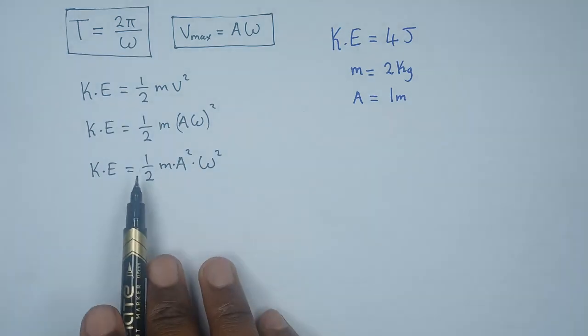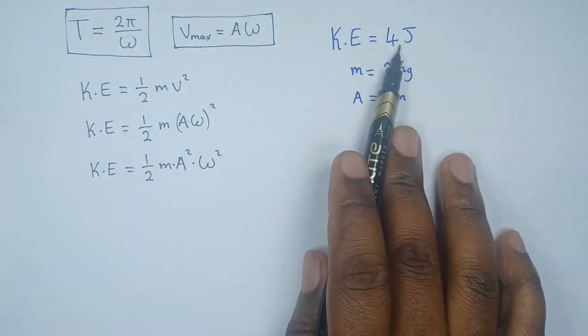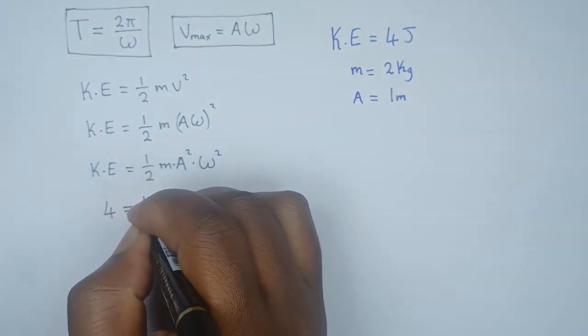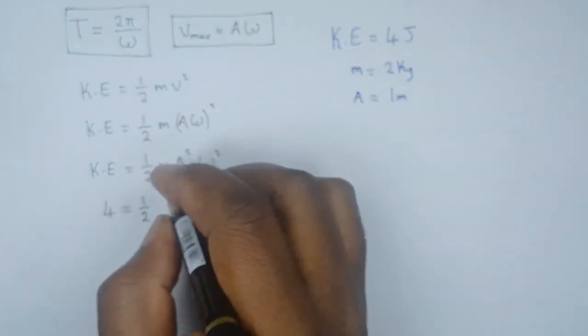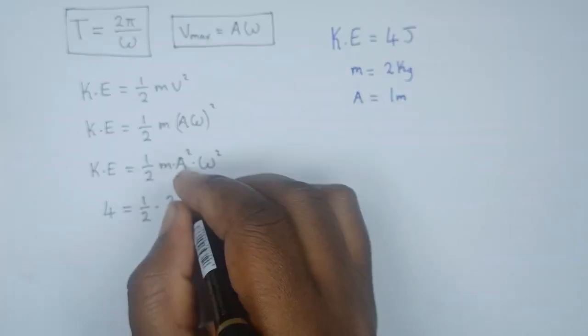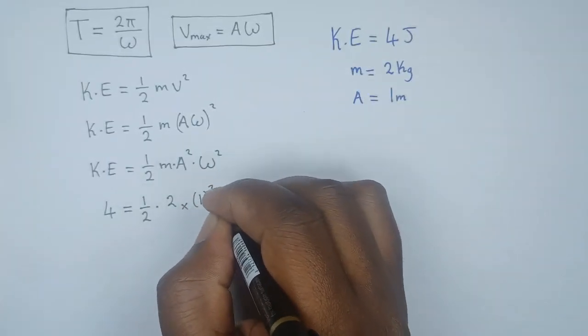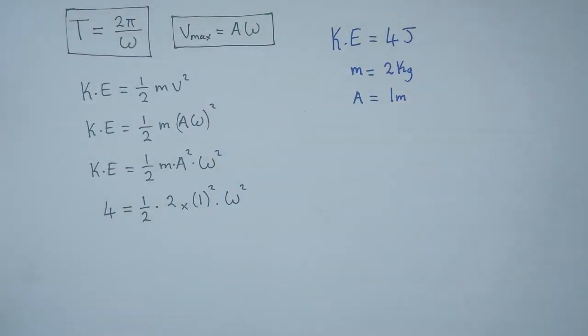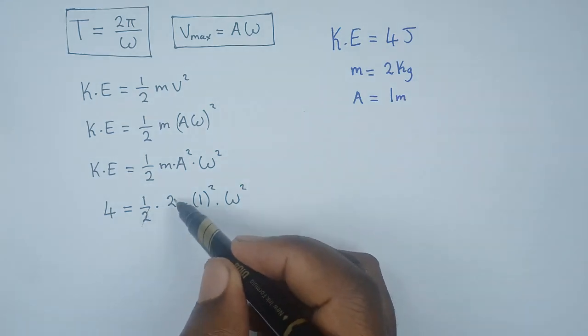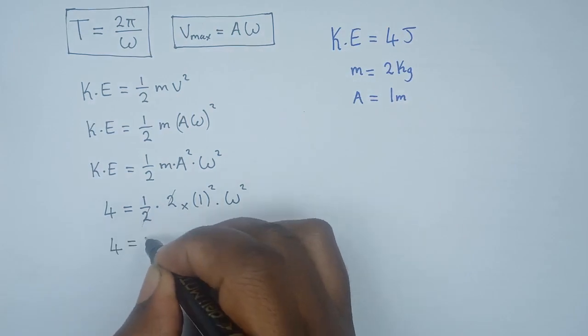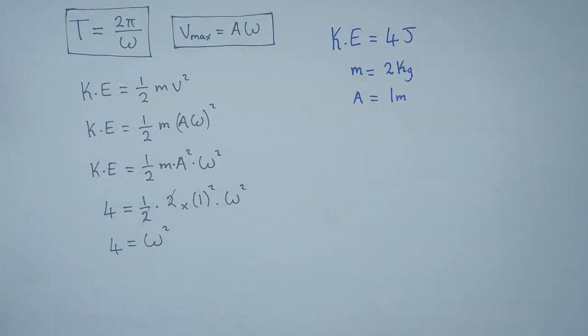To proceed from here, we know what kinetic energy is. The kinetic energy is 4, so here we have 4 = ½ times our mass, which is 2, multiplied by our amplitude, which is 1 squared, and everything is multiplying with ω². From there we can easily see that the 2 and this ½ will cancel. So 4 = ω².